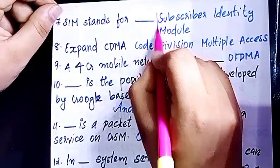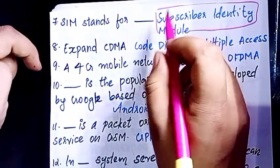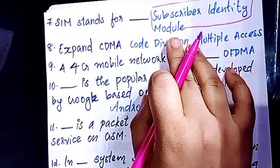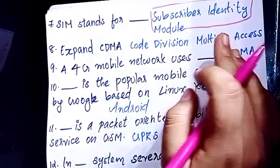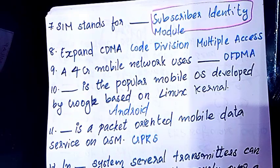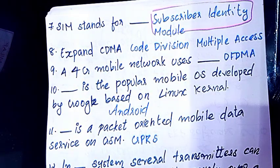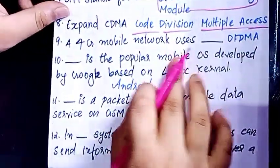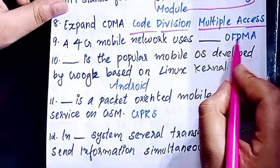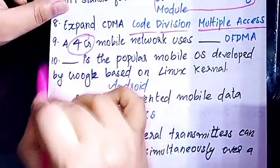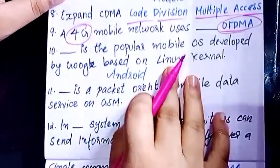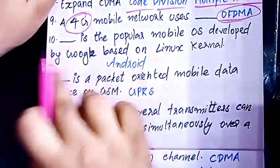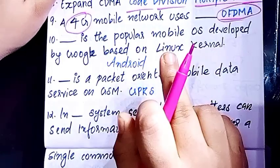SIM: Subscriber Identity Module — full form. CDMA: Code Division Multiple Access. 4G mobile network uses OFDMA.